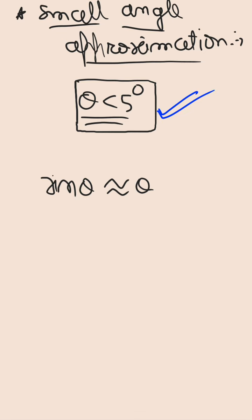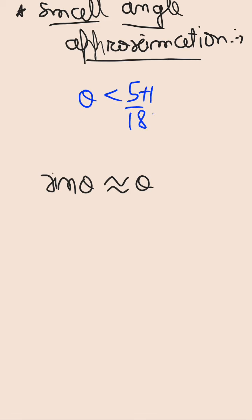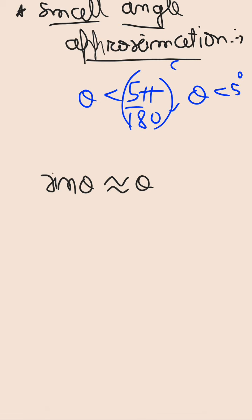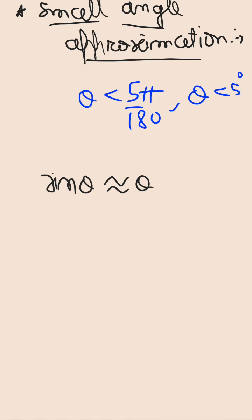Theta in radians: less than 5 degrees means theta is less than 5π/180 radians. Both statements are the same thing because 5π/180 radians equals 5 degrees. Here, pi is an indicator that the angle is given in radians. Generally, if pi appears in the value of an angle, we assume it is in radians, because in physics the radian symbol is not commonly written explicitly.